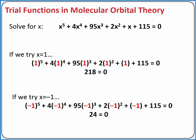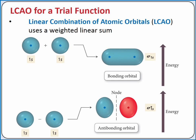In molecular orbital theory, a trial function is the guess that will substitute into the Schrödinger equation. To come up with a trial function, we can use linear combination of atomic orbitals. In valence bond theory, we created hybrid atomic orbitals by combining standard atomic orbitals on a single atom. In linear combination of atomic orbitals, we'll create molecular orbitals by adding together standard atomic orbitals from multiple different atoms in the molecule.